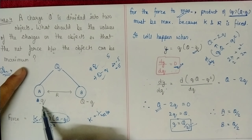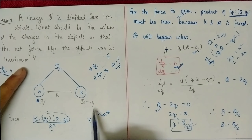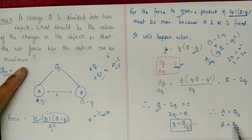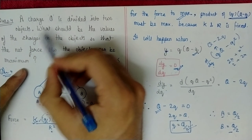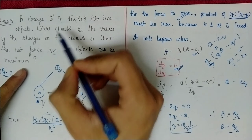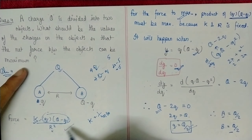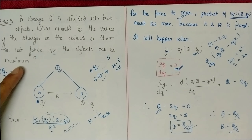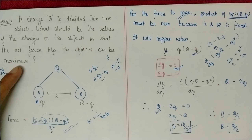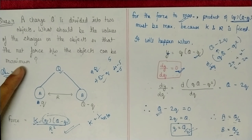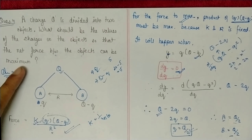Therefore, the force between the two objects is maximum when the charge Q is divided equally — Q/2 on each object. I hope this question is clear. Let's move to question 5.